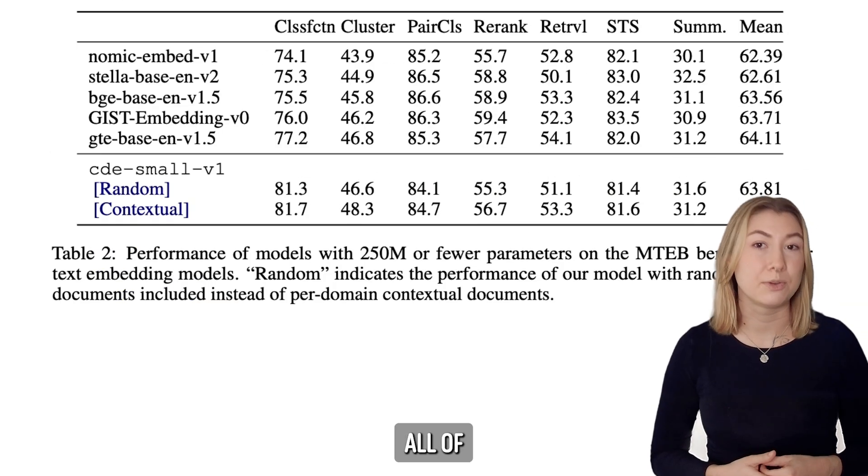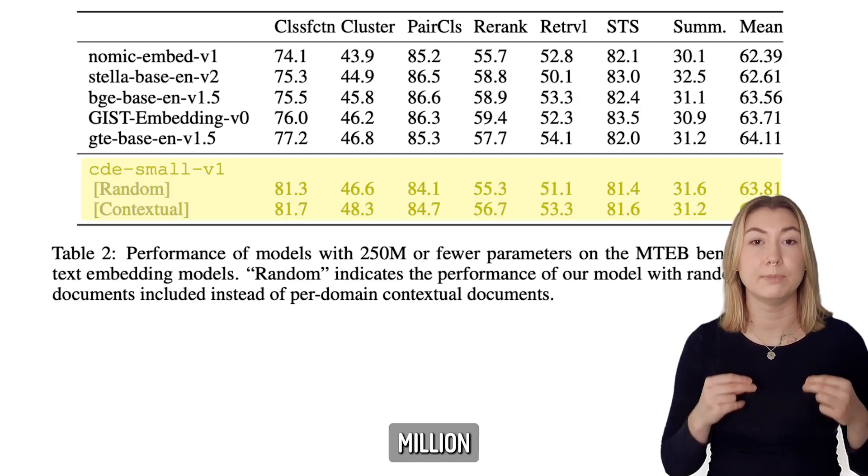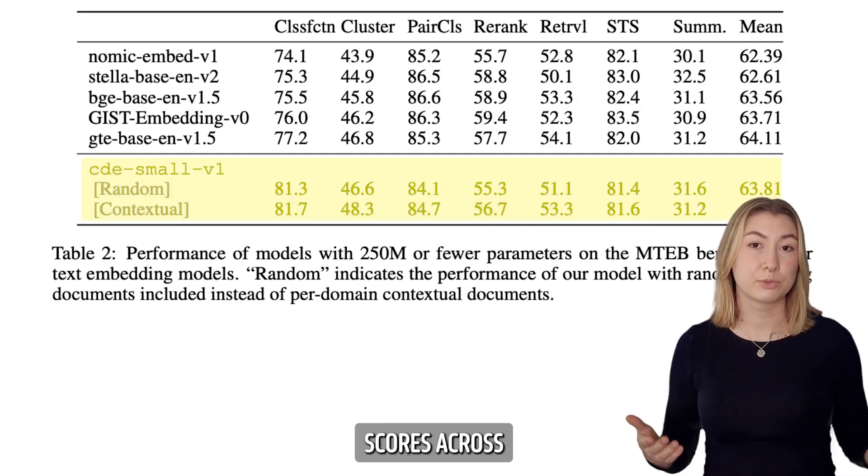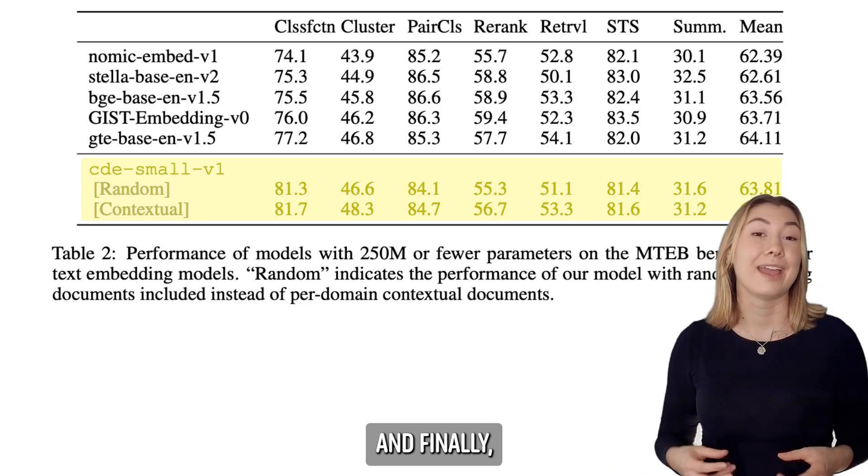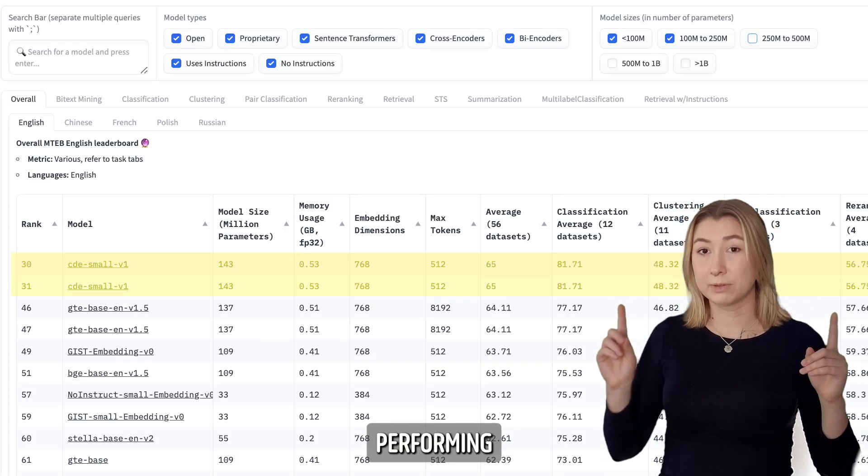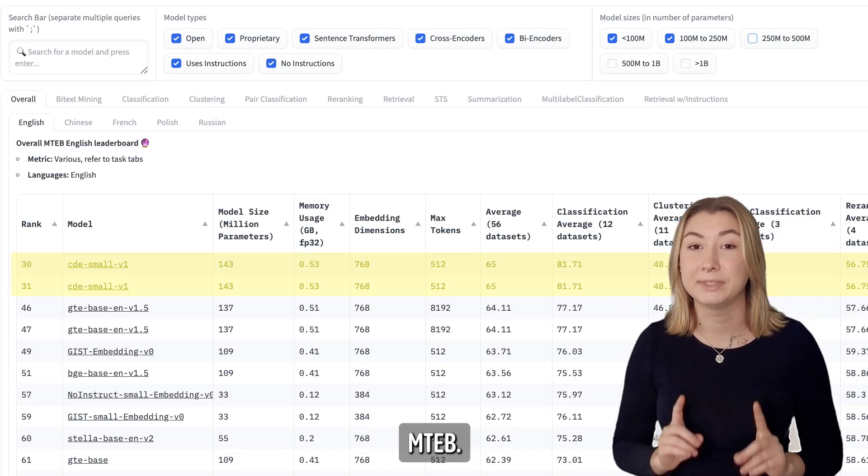Also, the model beats out all of the other smaller models with fewer than 250 million parameters, with better retrieval scores across a range of datasets. And finally, as of this video, it is still the best performing model for small models on MTEB.